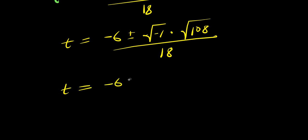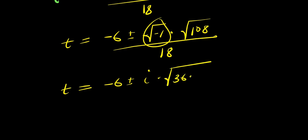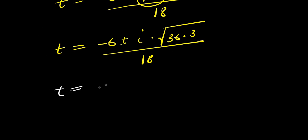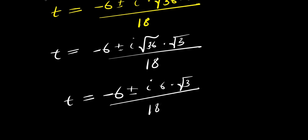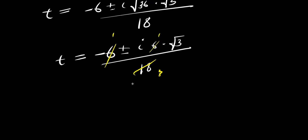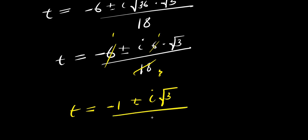So from here, I'm going to have t equals negative 6 plus or minus i times square root of 108. I can express 108 as 36 times 3, so the square root of 36 times square root of 3 is 6 times root 3, divided by 18. The 6 cancels with the 18 to give 3. So I'm going to have t equals negative 6 plus or minus i times root 3, divided by 3. I can factor out 1 over 3, giving t equals 1 over 3 times negative 1 plus or minus i root 3.